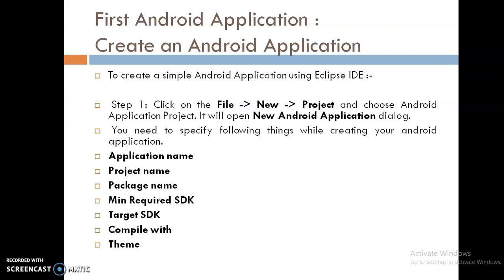To create an Android application using Eclipse Integrated Development Environment, the first step is to click on the File menu, then click on New, then Project, and choose Android Application Project. After clicking Android Application Project, it will open the New Android Application dialog, where you need to specify the following things: application name, project name, package name, minimum required SDK, target required SDK, compile with, and theme.